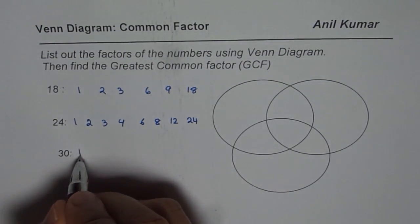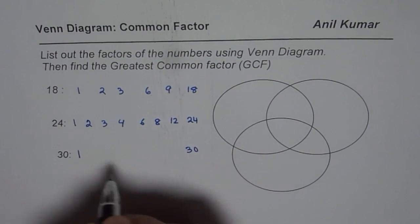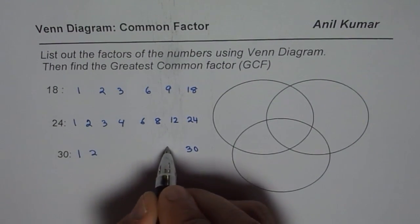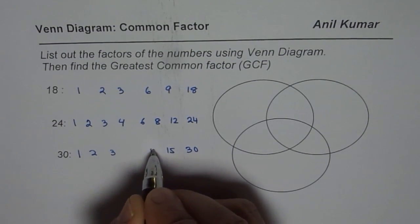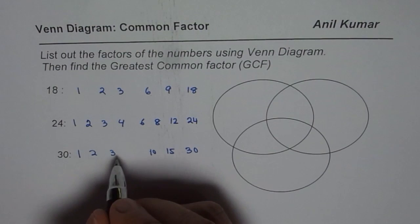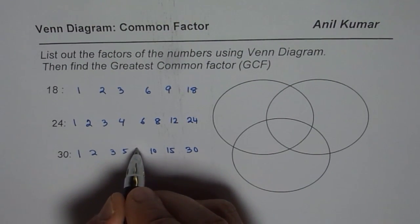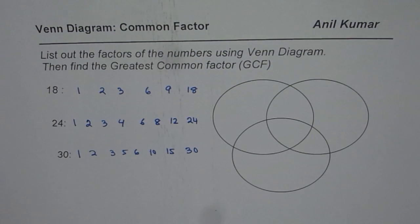List factors for 30: 1 times 30, 2 times 15, 3 times 10, and then 5 times 6. So these are possible factors, all the possible factors of the numbers.